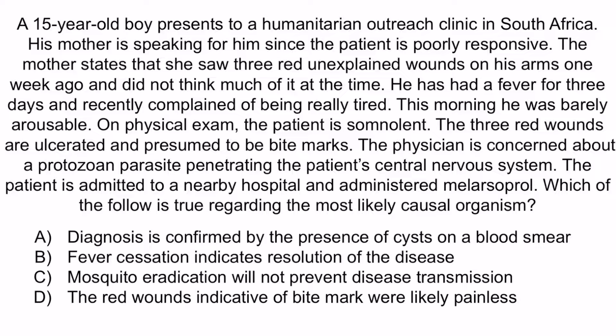Hopefully from the question stem you notice that this patient has African trypanosomiasis, or African sleeping sickness. He lives in Africa and he's somnolent. There are multiple pathogens that can cause somnolence, but the use of melarsoprol is a dead giveaway for this particular disease. Remember that melarsoprol and suramin are basically used only for African trypanosomiasis. The answer is choice C: mosquito eradication will not prevent disease transmission. After all, African trypanosomiasis is transmitted by tsetse flies, not mosquitoes.